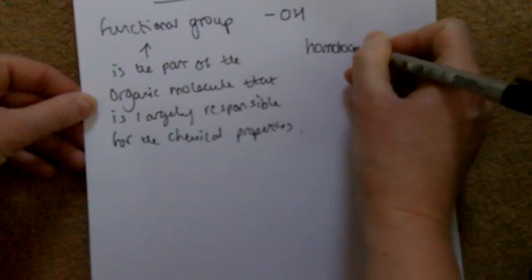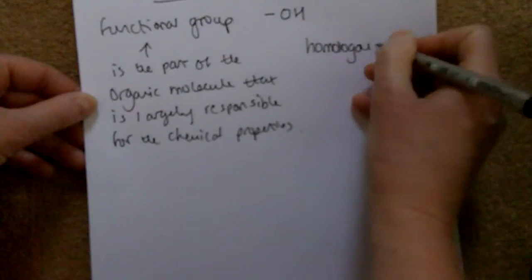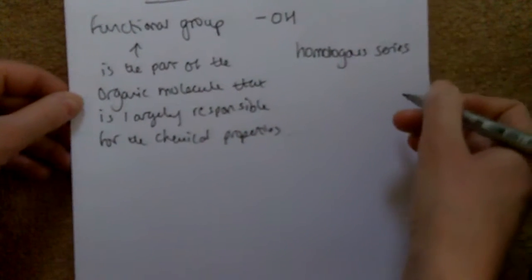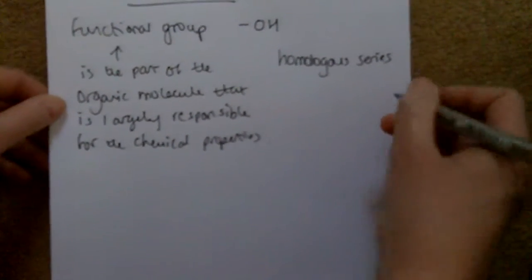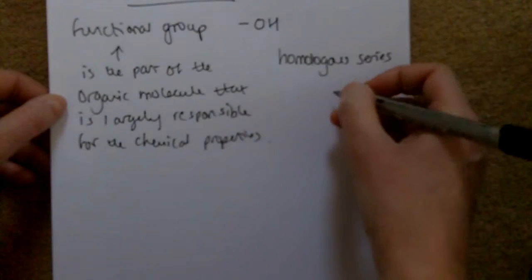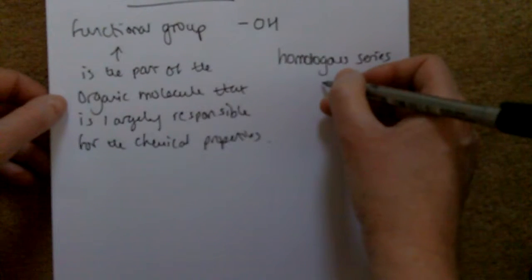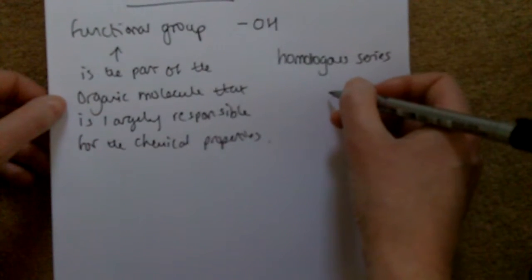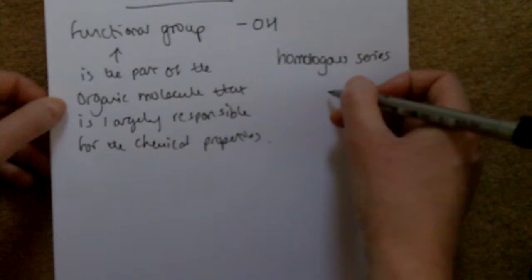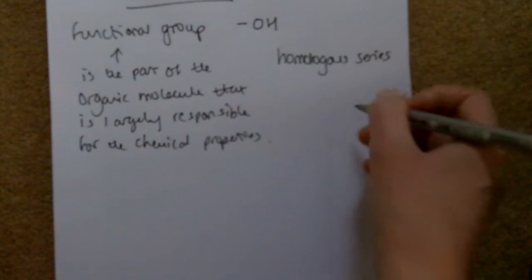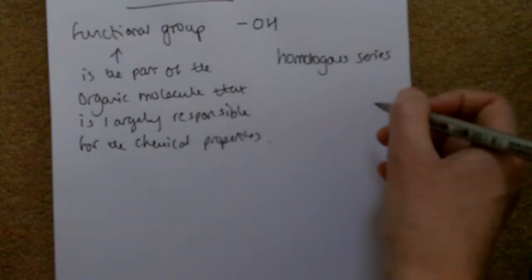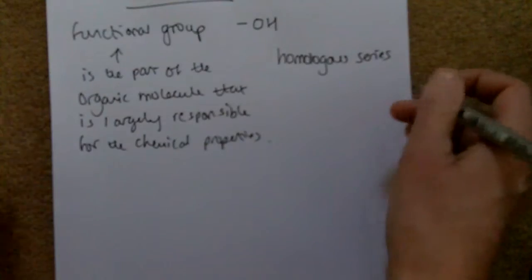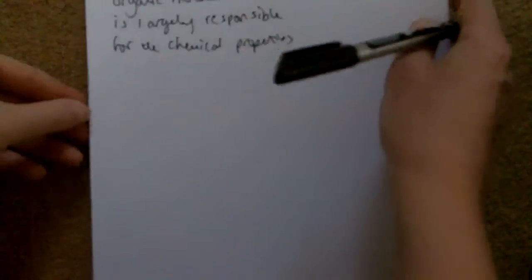Alcohols belong to a homologous series. Remember what a homologous series means: it's a family of compounds with the same chemical properties and the same functional group, but each member differs by CH₂.